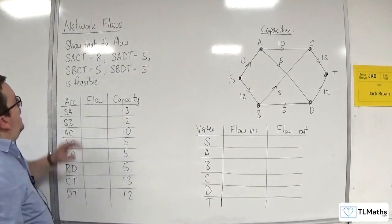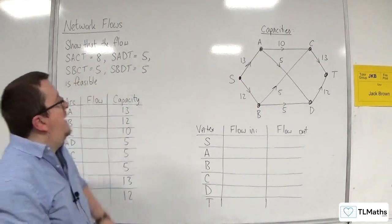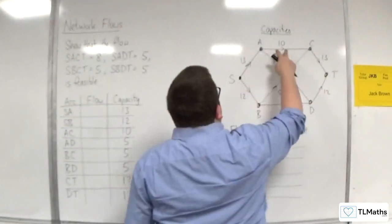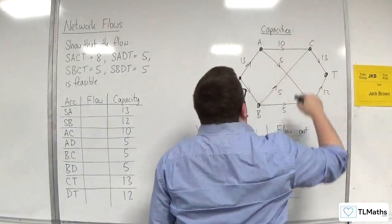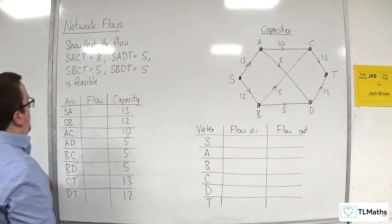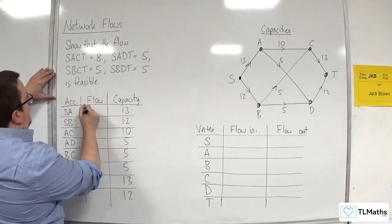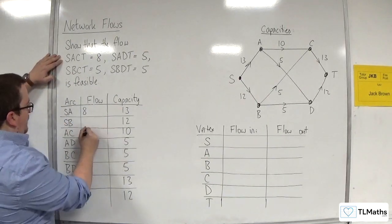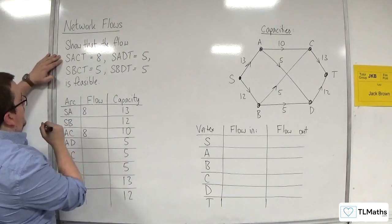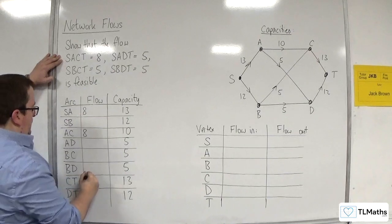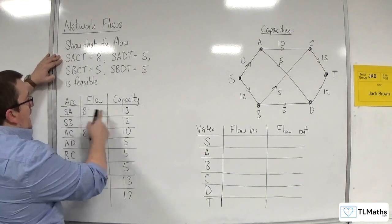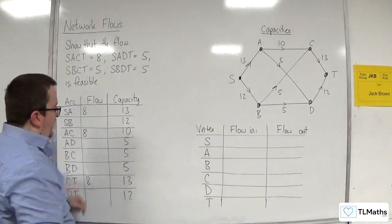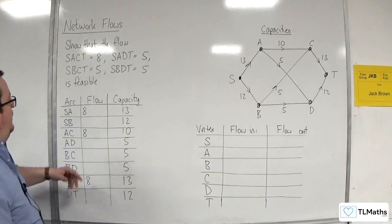So SACT goes along SA, AC, and CT. SA will have a flow of 8, AC will have a flow of 8, and CT will have a flow of 8. There's no problem with the capacities there.